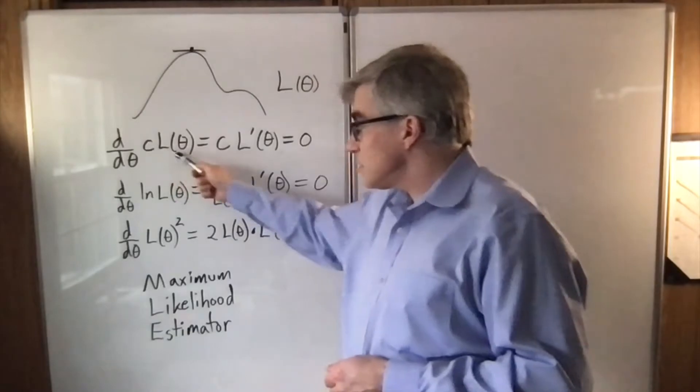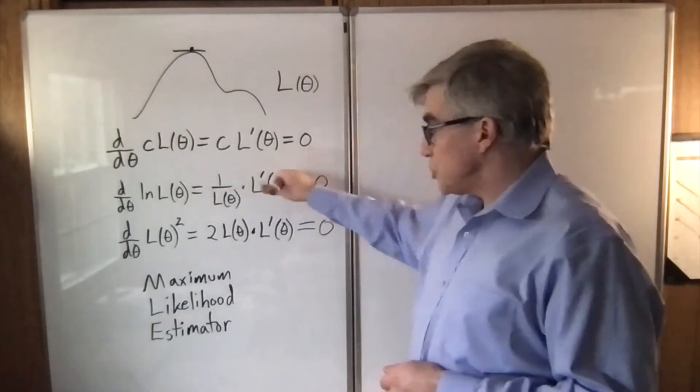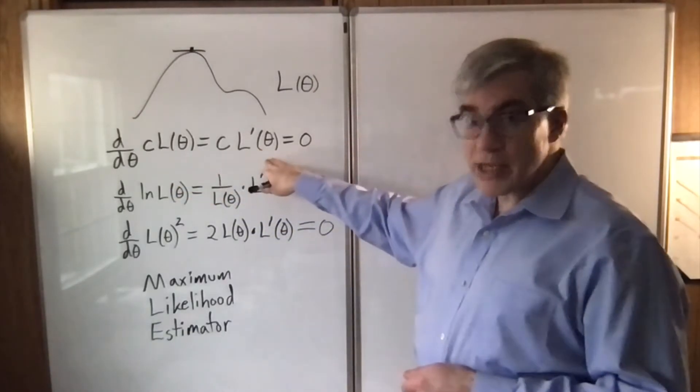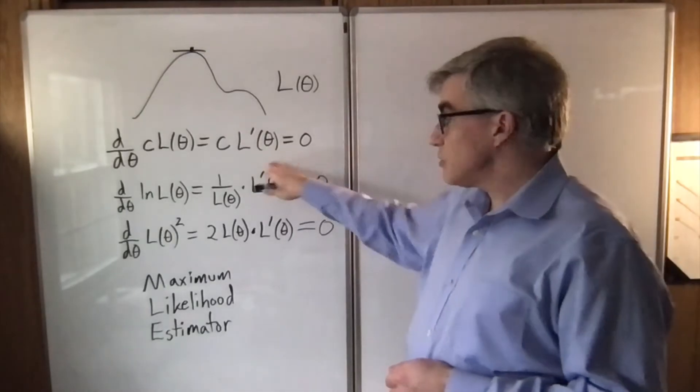So the derivative of a constant times the likelihood is just constant times the derivative of the likelihood. And so it's going to have zeros in the same place.